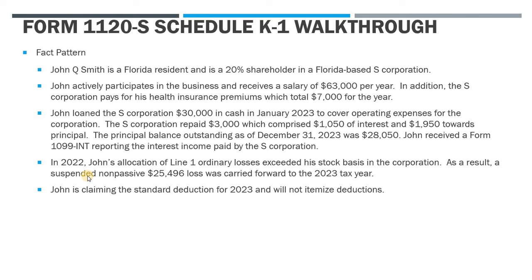In 2022, John's allocation of losses exceeded his stock basis, resulting in a stock basis limitation. He had suspended non-passive losses of $25,496 which were not deducted last year — they were carried forward to this year. Lastly, John is going to be claiming the standard deduction for 2023, so he will not be itemizing.